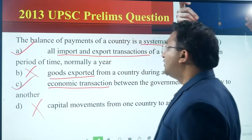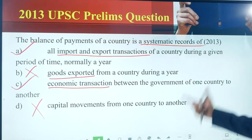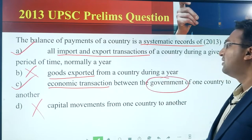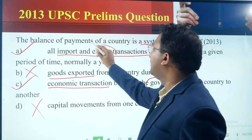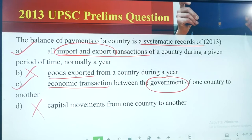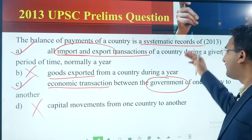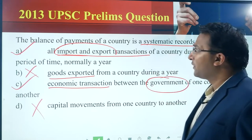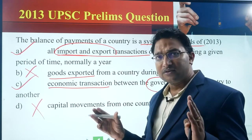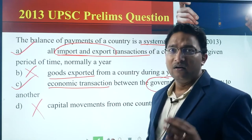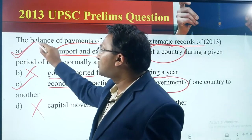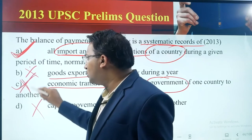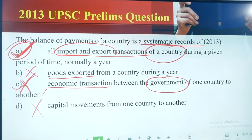We are left with option A and option C. None of them gives the complete definition — option C talks about transactions between governments, whereas option A talks about import and export. In broad terms, import and export transactions can include goods, services, capital, etc. — everything. This is of a country and during a given period, normally a year. So option A looks more comprehensive compared to option C. The answer is option A.